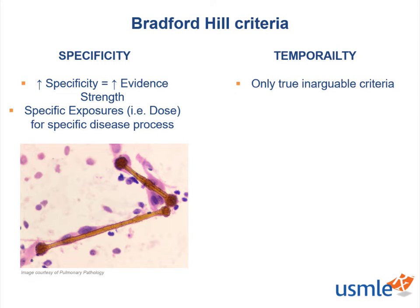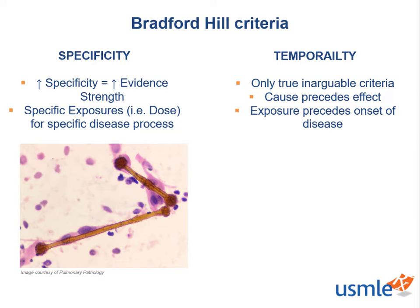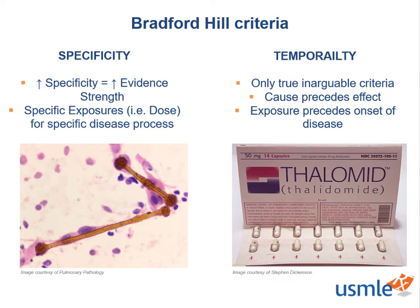Our next criterion is temporality, and this one is pretty non-negotiable — the only criterion that absolutely must be met. Temporality simply states that the cause or exposure must precede its effect or onset of disease. We all know about the effect of thalidomide: in the early 1950s and 60s, women used it as a powerful anti-emetic for morning sickness, not knowing how catastrophic it was for their babies — thousands died in utero or were born with severe limb defects. This also applies to mothers who used DES in utero, whose daughters have increased risk of breast cancer and vaginal clear cell adenocarcinoma.